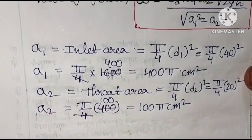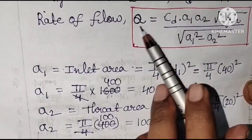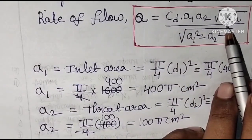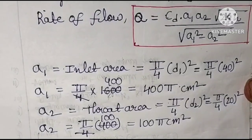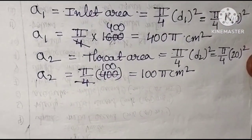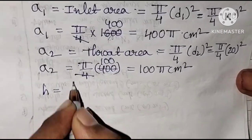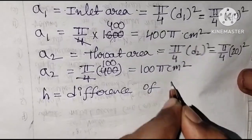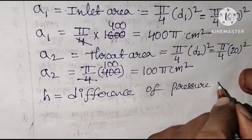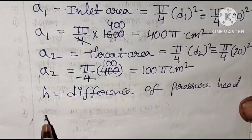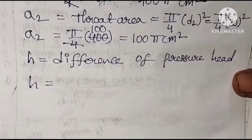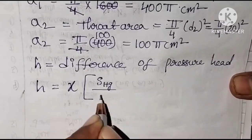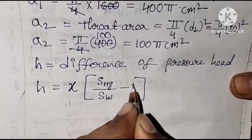The remaining unknown in the formula is H, the difference of pressure head. CD is given, A1 and A2 are calculated, and G is the acceleration due to gravity. H is the difference of pressure head, which we need to calculate from the manometer reading.